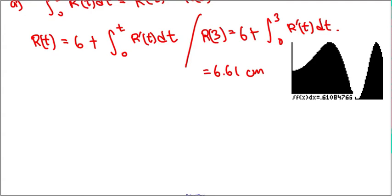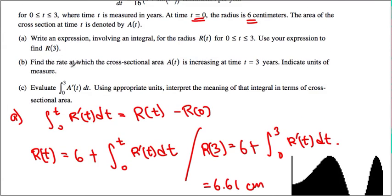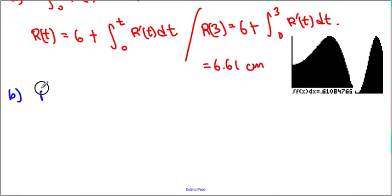Alright, let's look at part B. Find the rate at which area is increasing at time t equals 3. We realize that A is equal to pi r squared. But in this case, A prime, which is our question, is equal to 2 pi r r prime.